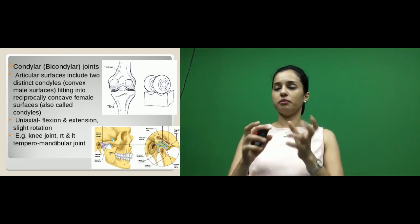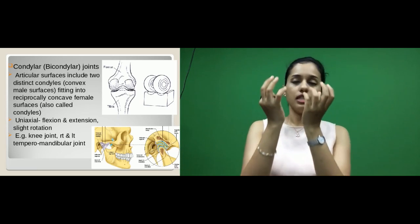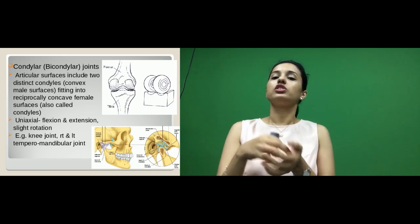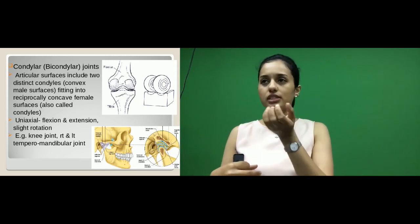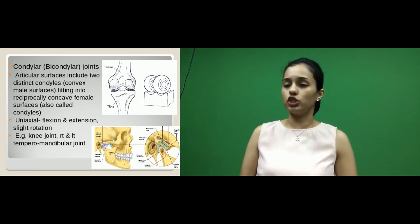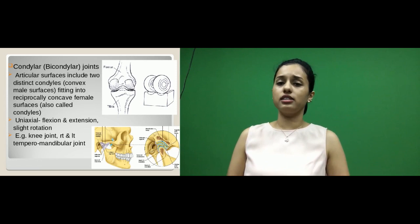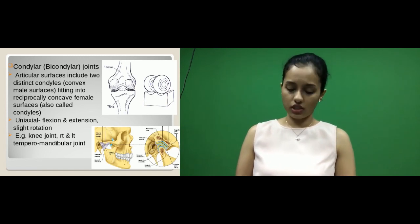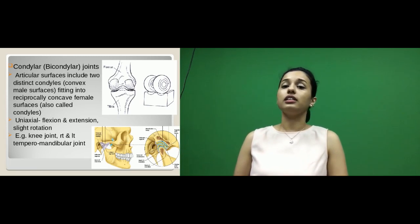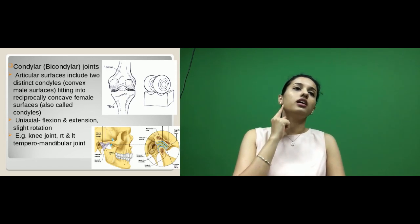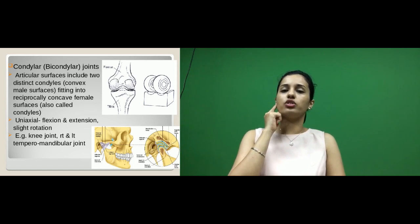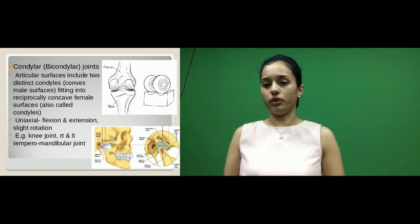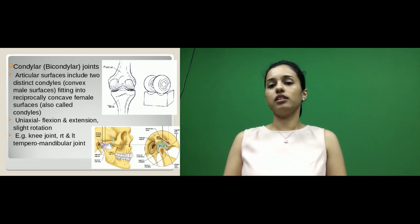The next type is condylar, also called bicondylar, because there can be two condyles. Here the articular surfaces show two convex surfaces called condyles, which fit with concave surfaces also called condyles — one convex fitting with one concave. This is basically seen in the knee joint. This joint is uniaxial, with the main movements being flexion and extension, and a little rotation. It is also seen in the temporomandibular joint, which mainly helps in opening and closing the mouth.